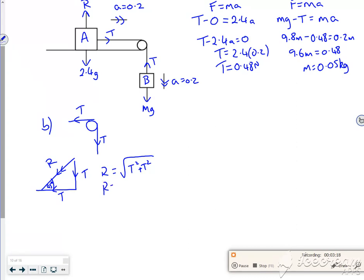So it'll be root 2 times T. So it'll be root 2 times 0.48, and it'll give us roughly 0.68 Newtons there.